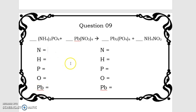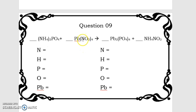Taking a look at question 9, the first thing we're going to do is count up the atoms in our equation. I have 1 nitrogen here times 3, so there are 3 nitrogens in the first molecule. 1 nitrogen times 4, so there are 4 nitrogens in the second molecule. 3 plus 4 gives us 7 nitrogens total.